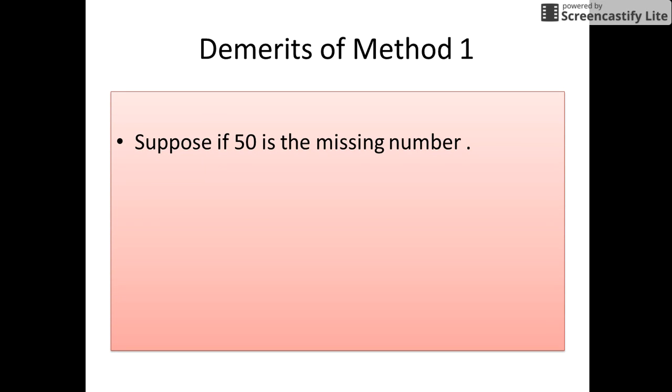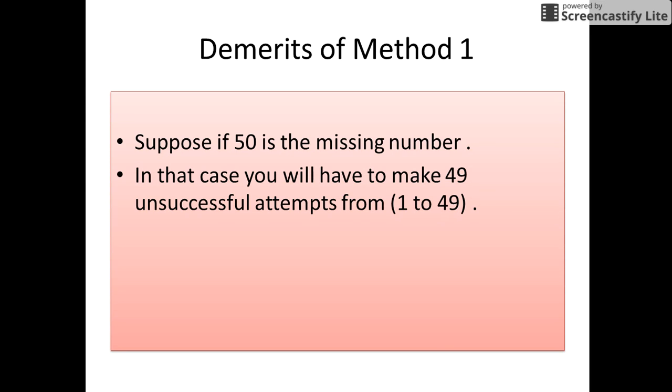Suppose the number that was missing was 50. So in that case, you will have to make 49 unsuccessful attempts. That is, you will have to see for the missing numbers from 1 to 49. So this is not a smart choice.